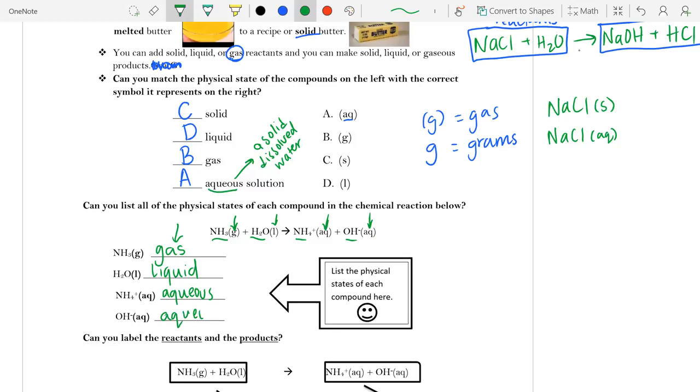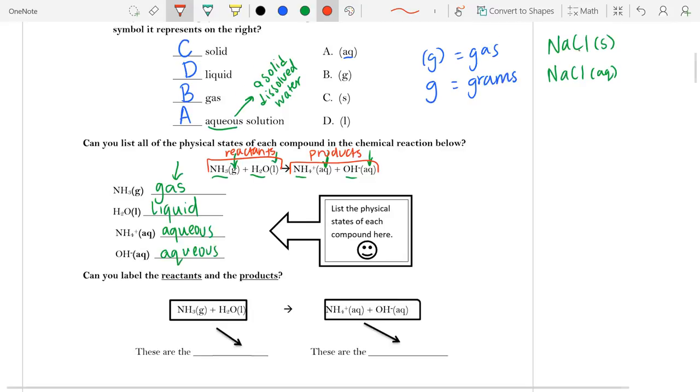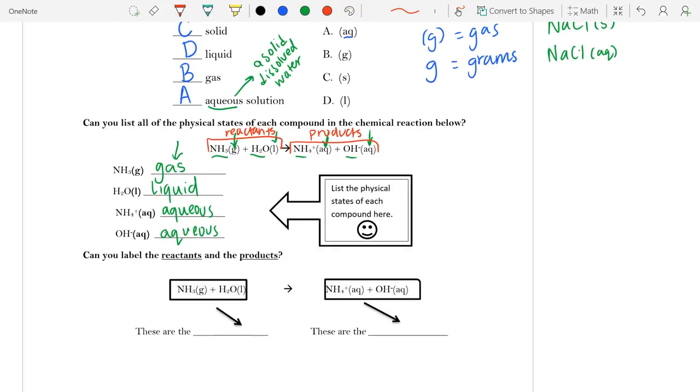And the aq for both ammonium and hydroxide tell me that they're both aqueous solutions. So, we had very different things in our reactants and different things in our products. Keep in mind that my reactants is everything on the left side.